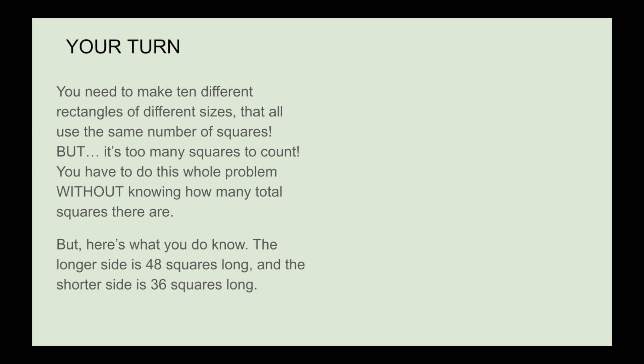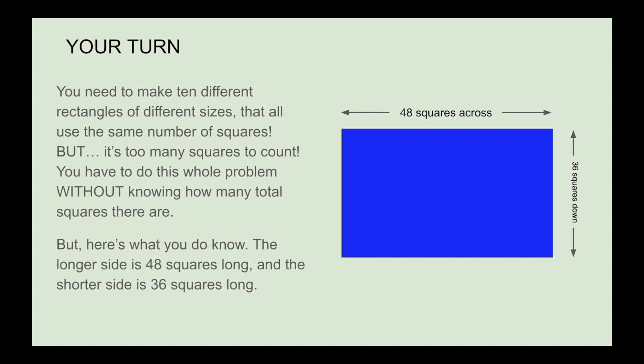Here's what you do know: the longer side is 48 squares long and the shorter side is 36 squares long. You can count the length and the width because it doesn't take that long, but if you wanted to count all the squares in the middle that would take a really long time. And you know, the floor is pretty hot—it is lava after all. You're getting a little warm, you don't feel like doing all that counting.